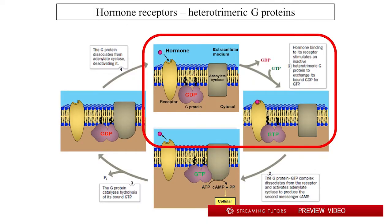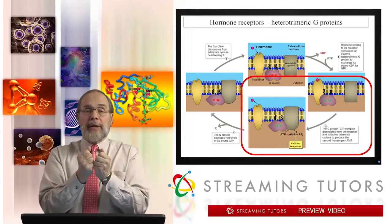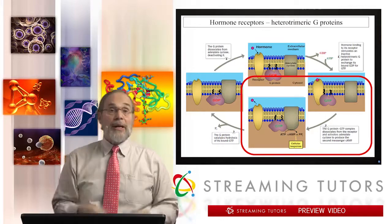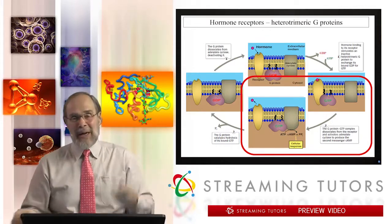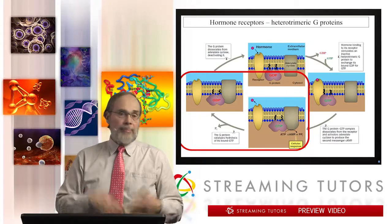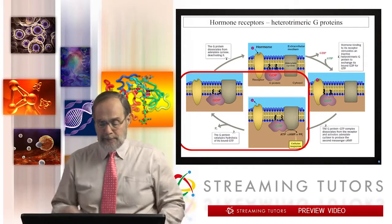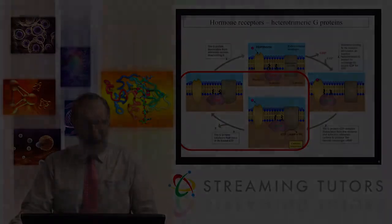Going around the cycle: GDP is released and GTP is absorbed, activating the G-protein. It then moves over to adenylate cyclase, activating it to produce cyclic AMP, which is released into the cytosol. This whole apparatus is embedded in the plasma membrane, transducing the extracellular hormone signal — in this case epinephrine — into an intracellular cyclic AMP second messenger signal. The G-protein activates the cyclase through association, then hydrolyzes GTP after a certain time — milliseconds, seconds, depending on the specific heterotrimeric G-protein involved. It's not obvious here that the G-protein is a trimer, but that will be apparent when we zoom in on it.